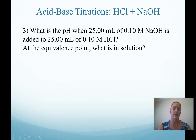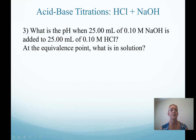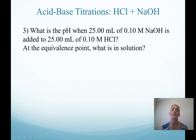What you should recognize is that we are now at the equivalence point. The third point in the titration is always the equivalence point. A reminder that the equivalence point is when we have stoichiometric equivalents of acid and base in solution. For purposes of this course, we only work with one-to-one ratios, so that means I have exactly the same number of moles of acid and base.